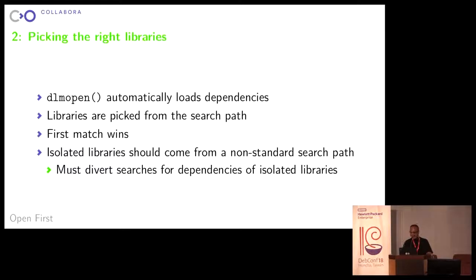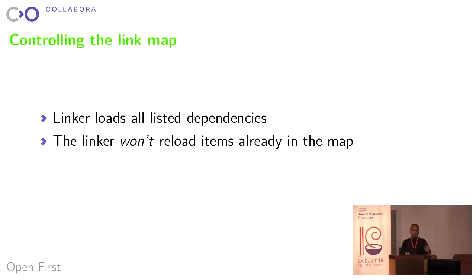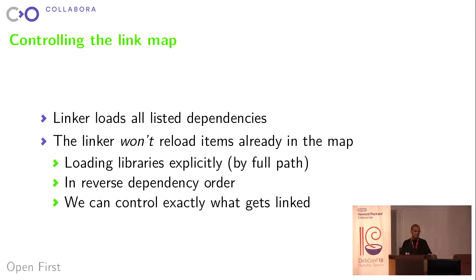Isolated libraries should come from the non-standard search path, so we need to divert the searches somehow. The linker won't reload items it already sees in the link map. By loading libraries in reverse order and using the explicit full path instead of just the short soname, we can control exactly what gets into any particular link map — effectively doing the lookup and loading manually, mixing and matching host and runtime libraries in the new private link chain created with DLMopen.